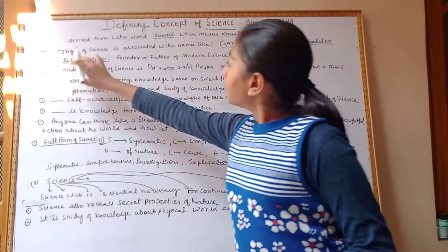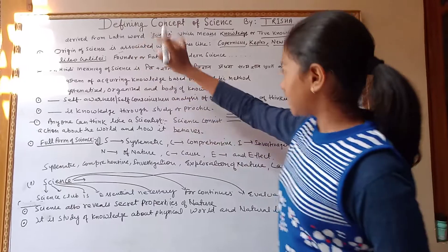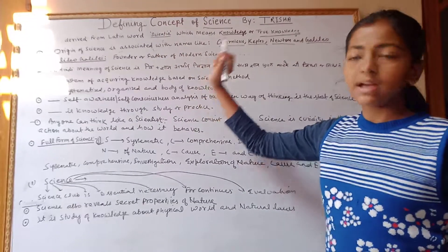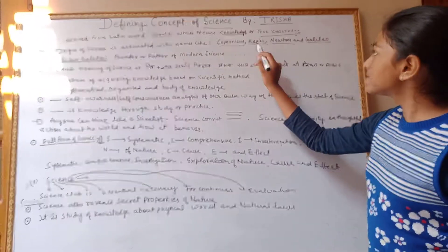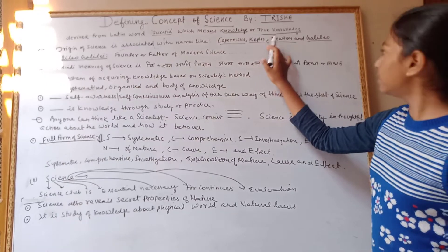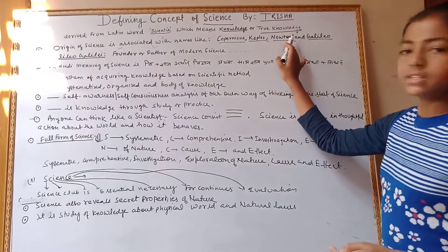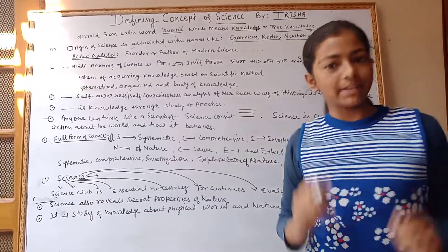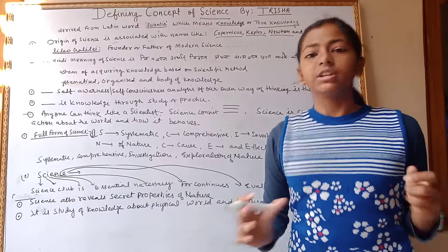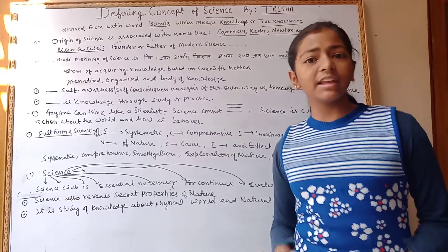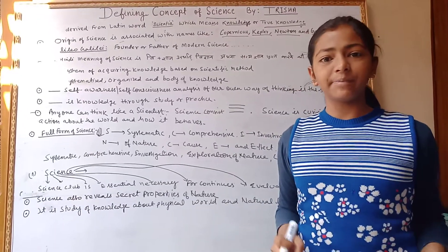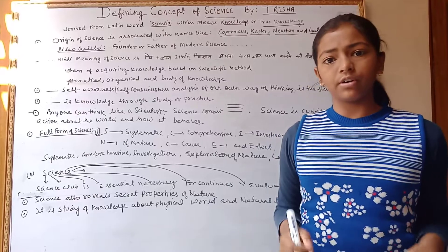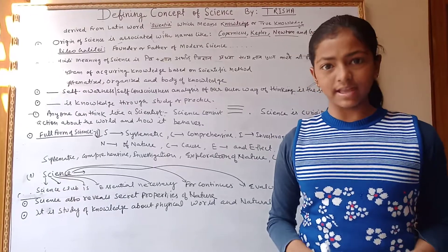The origin of science is associated with the names of Copernicus, Kepler, Newton, and Galileo. I would like to salute the famous scientist Galileo Galilei, the founder or father of modern science.